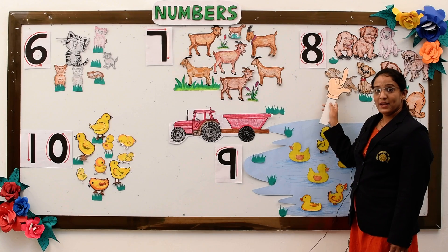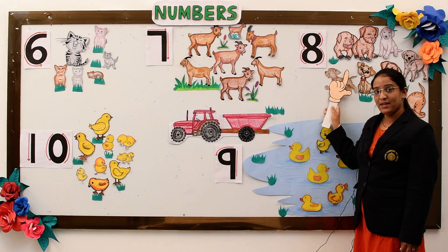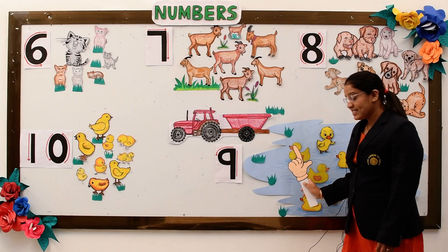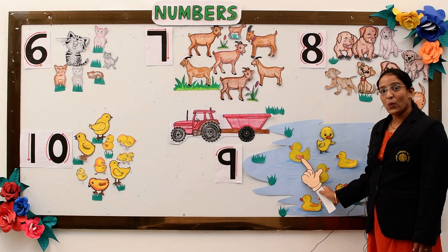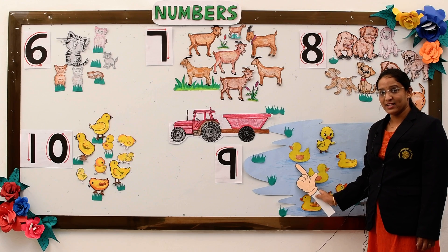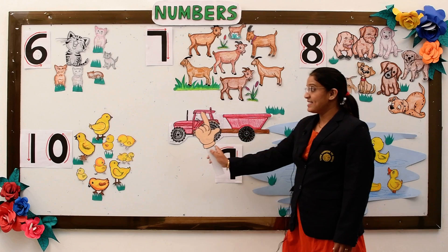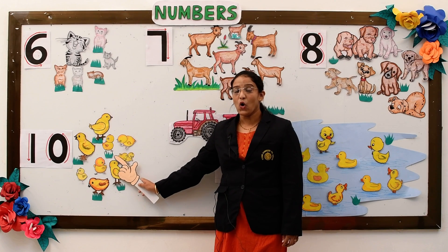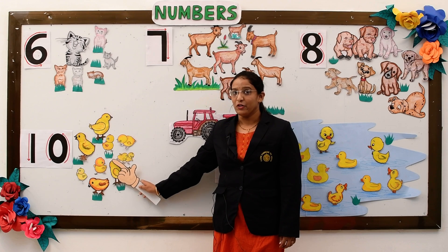Eight little puppies looking for their ball. Little tractor helps them climb over the wall. Nine little ducklings swimming side by side. Quack, quack, little tractor, can we have a ride? Ten little chicks all want to rest. Little tractor brings them straw for a nest.